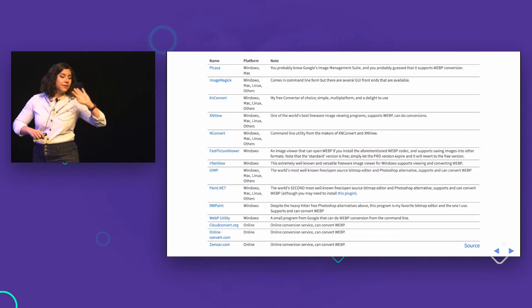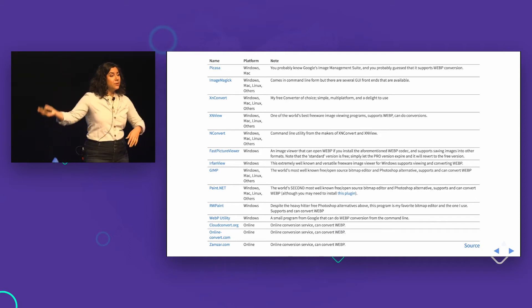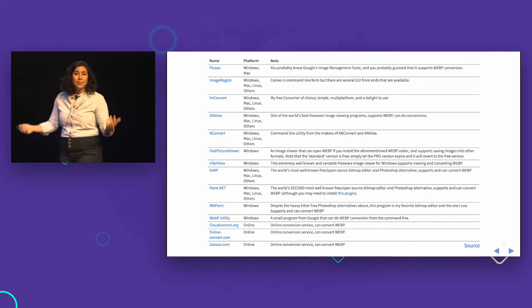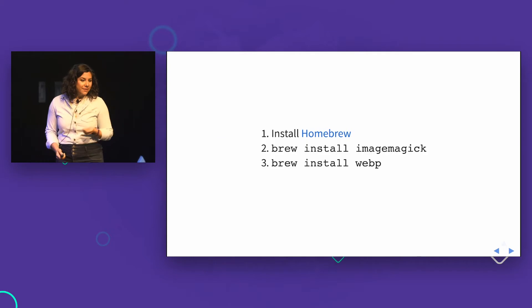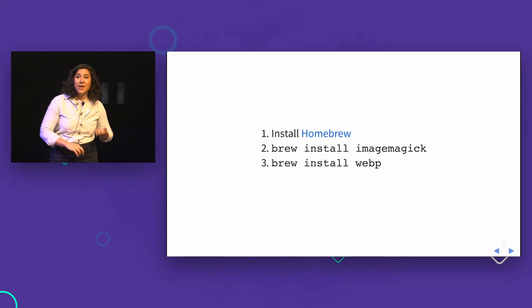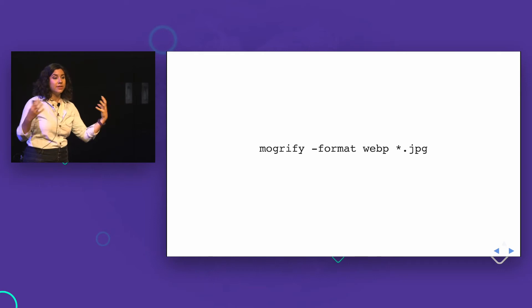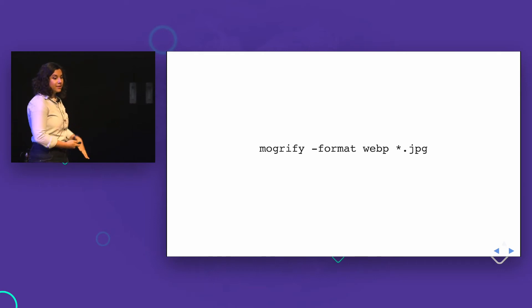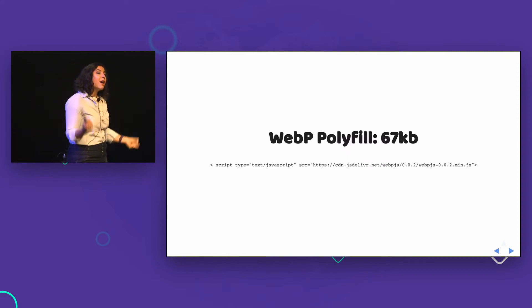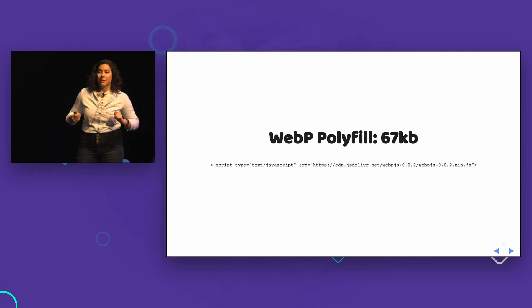To convert to WebP, you can use a Photoshop plugin, command line tools, or web tools. With Homebrew, you can brew install ImageMagick and then install WebP. Once installed, in one line of code you can use ImageMagick's mogrify to convert everything in a folder from JPEG to WebP. If you're going to use WebP, there's a polyfill called WebPJS — it's 67 kilobytes. So if your savings are greater than 67 kilobytes, it could be worth considering.